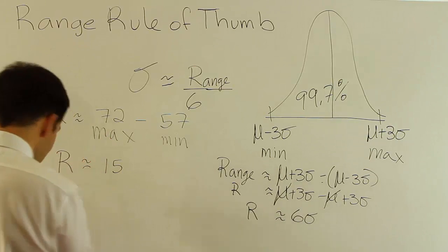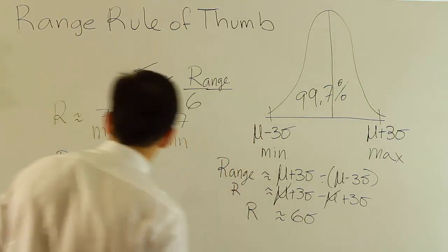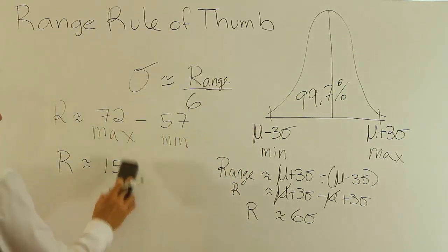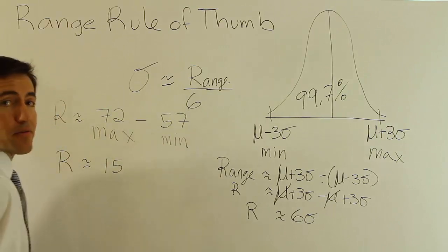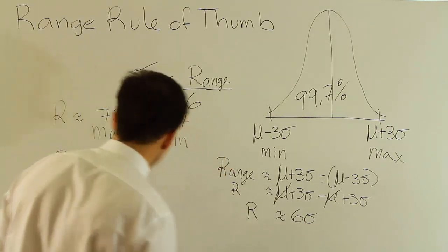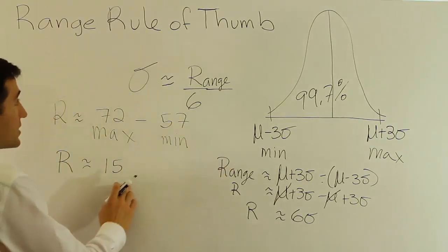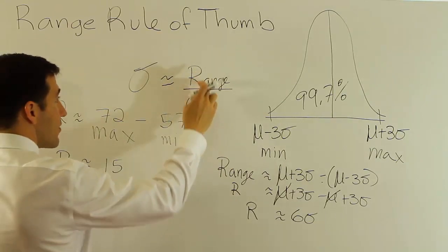So actually my range is exactly 15, but we're saying that the range is approximately 15 because these numbers are made up. They're not really maximum minimums, but they're pretty close to it. All right, now if that's my range, then according to this rule, if I divide that range by 6, I should get approximately the standard deviation.